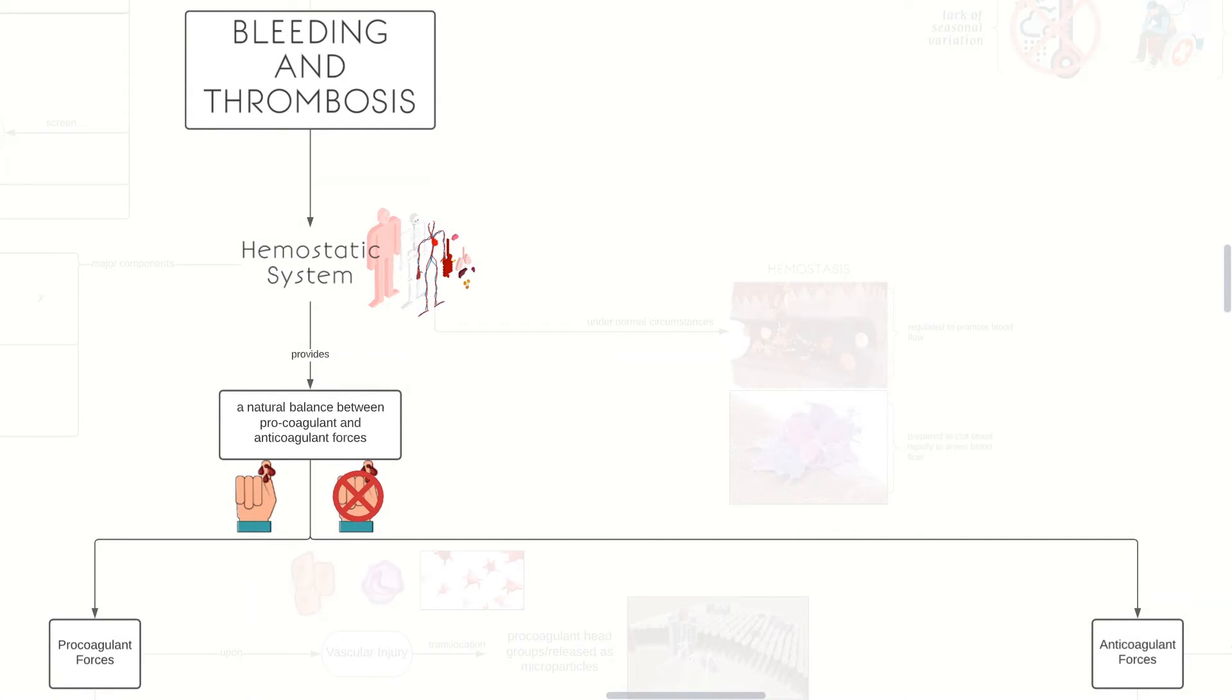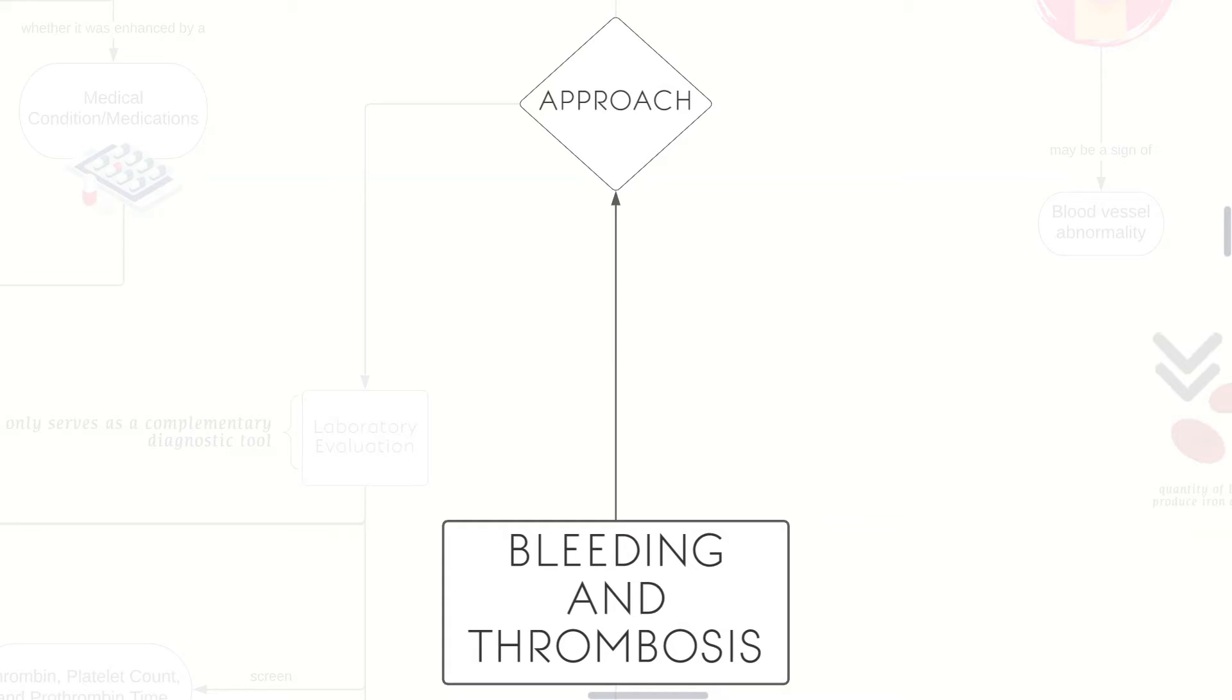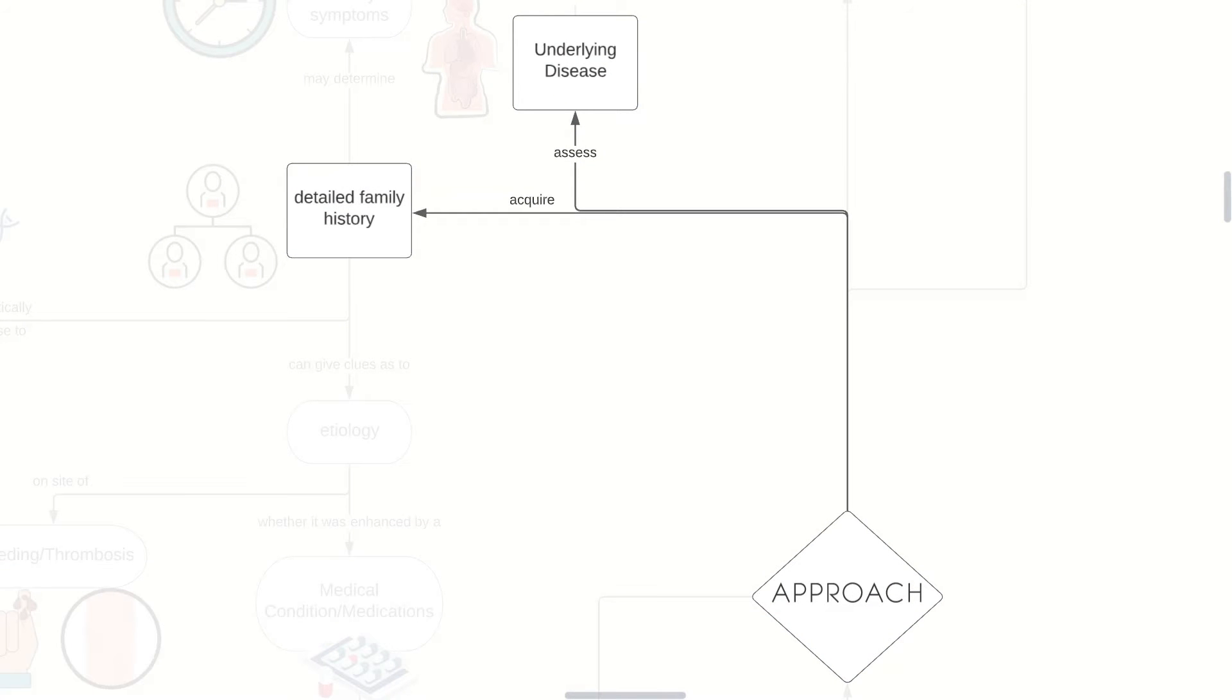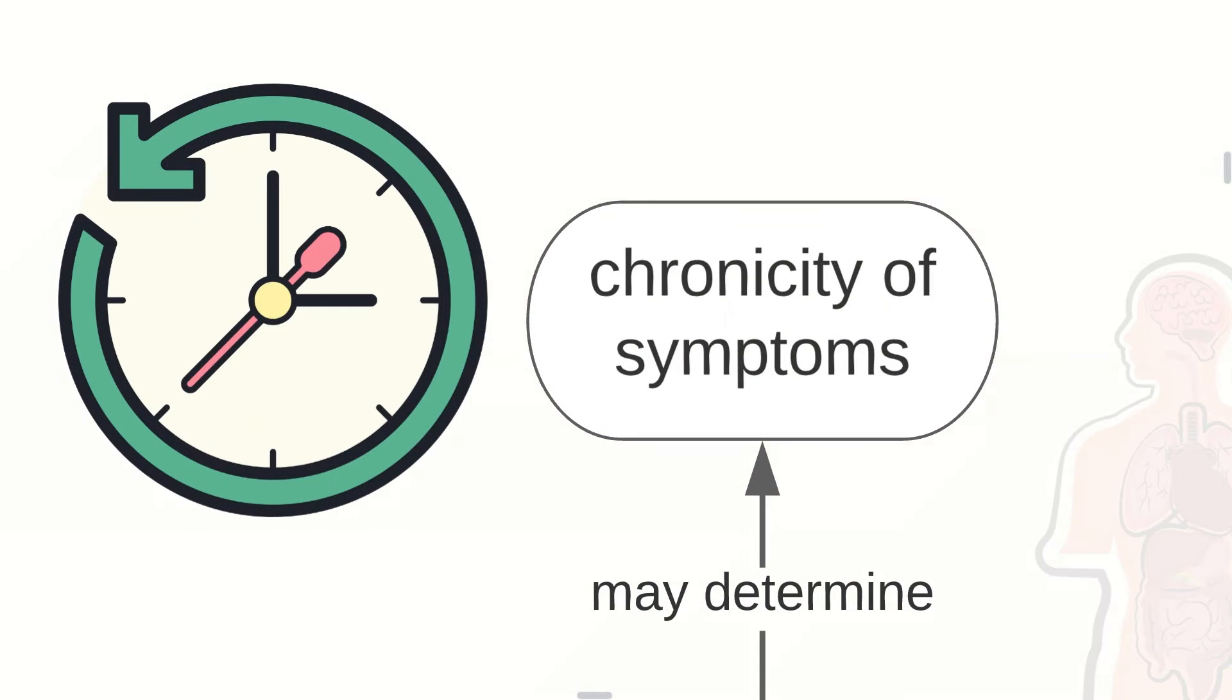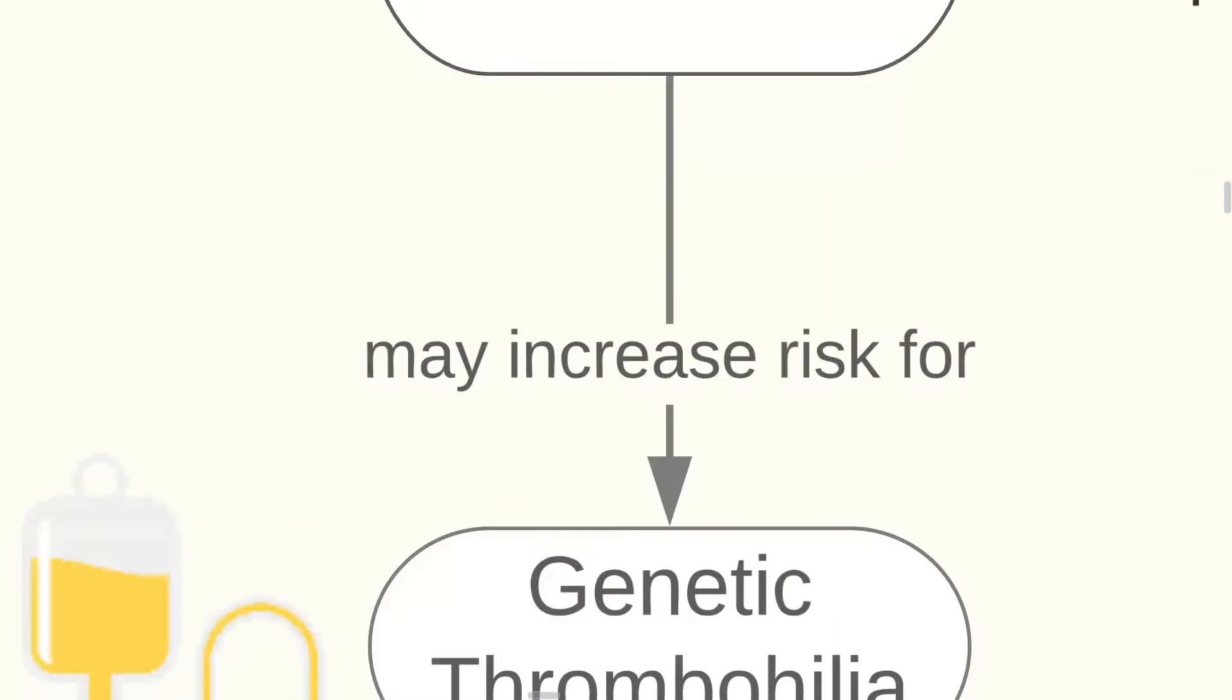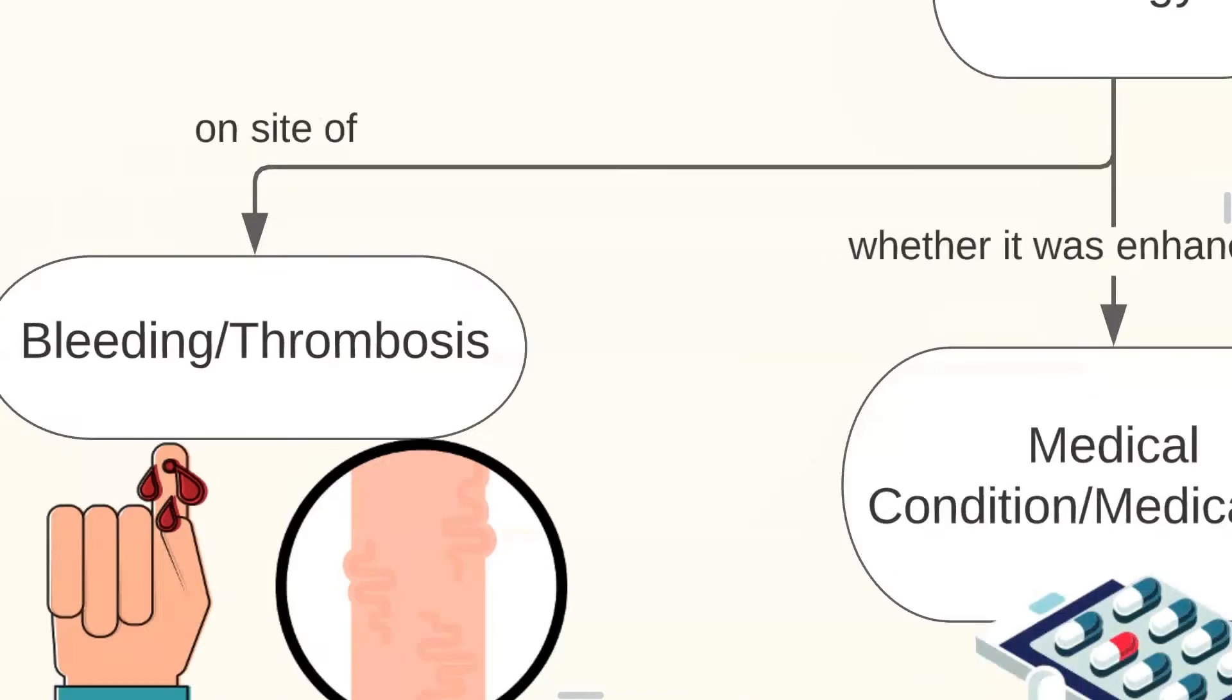Now that we're done discussing the natural balance between these two forces, we can now begin our approach. Let us begin with acquiring a detailed family history. A detailed family history may determine the chronicity of symptoms, or it may determine who are genetically at risk for thrombus formation, which may increase the risk for genetic thrombophilia.